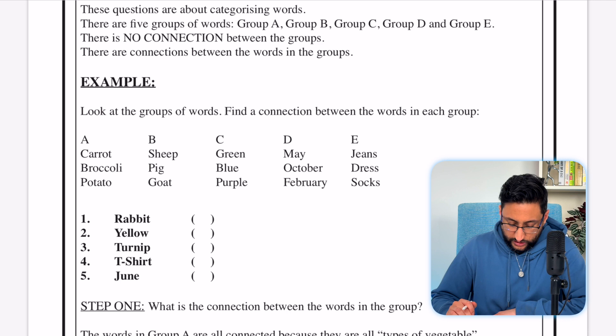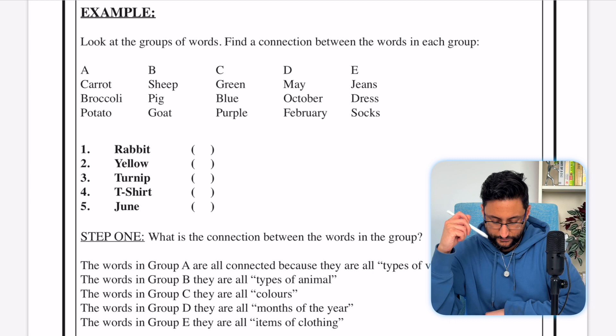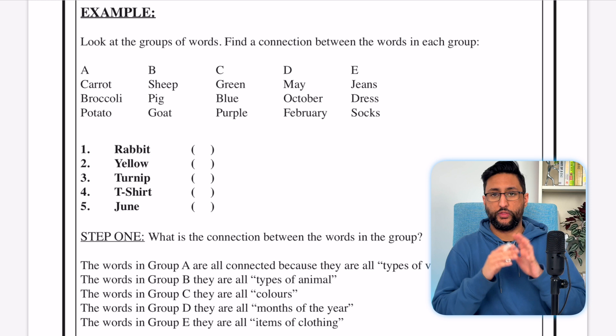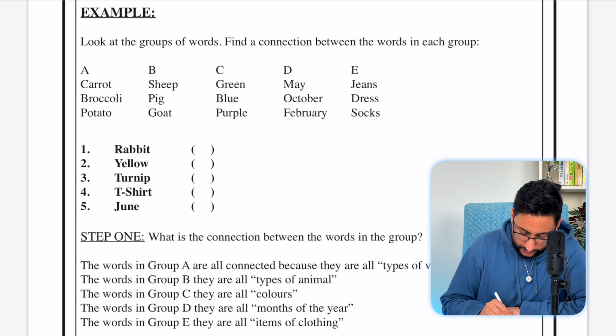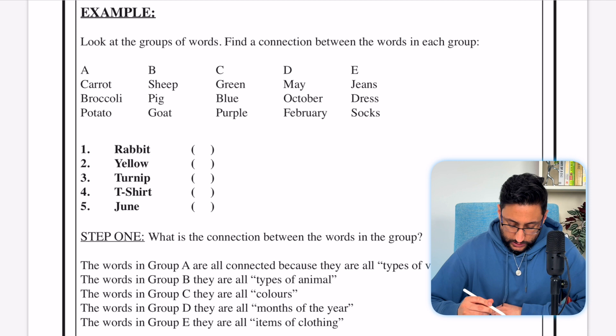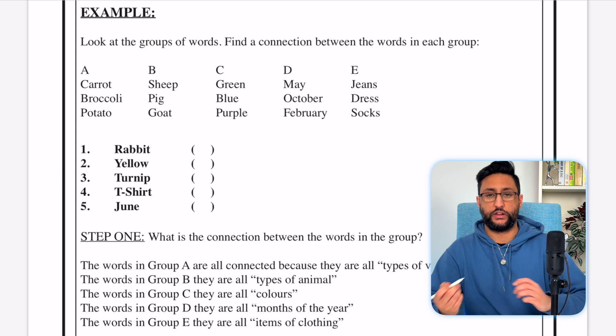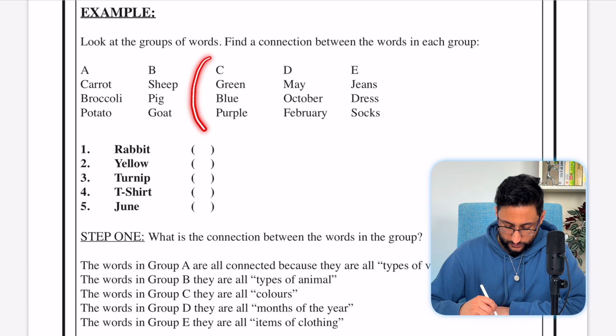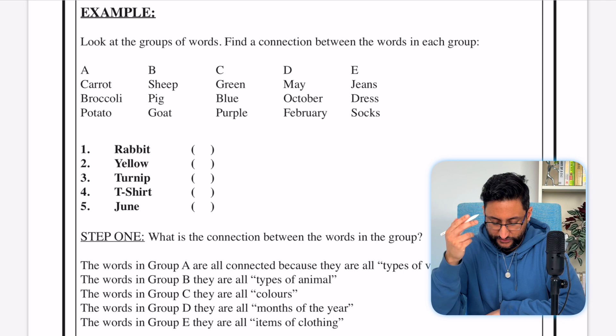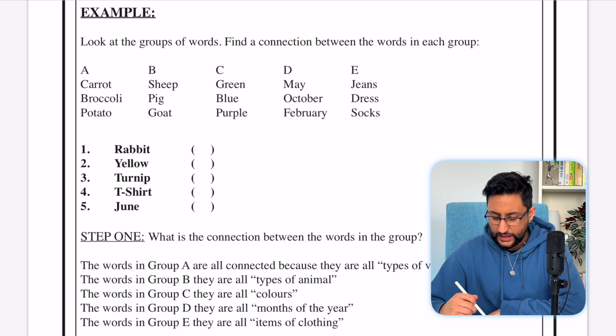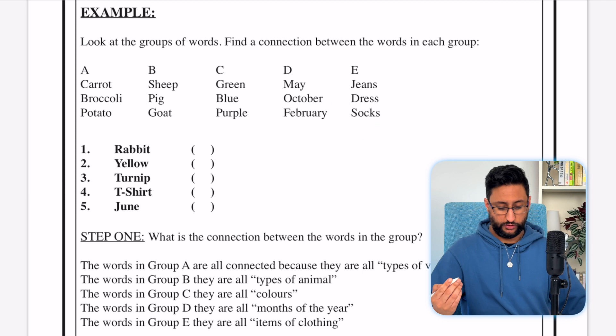So let's look at our first example. We have five groups of words A, B, C, D and E and we've got to find a connection between each of these words within the group to figure out what that group is representing. In group A we have carrot, broccoli and potato and they're all types of vegetable. In group B sheep, pig and goat, so these are going to be farm animals. C we have green, blue and purple which is obviously colours. D we've got May, October and February — these are all months of the year. And E we have jeans, dress and socks, which are all items of clothing.